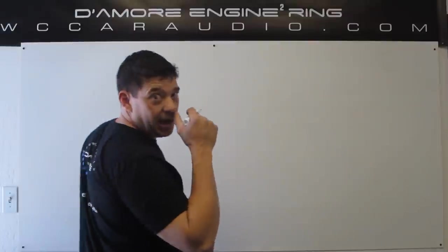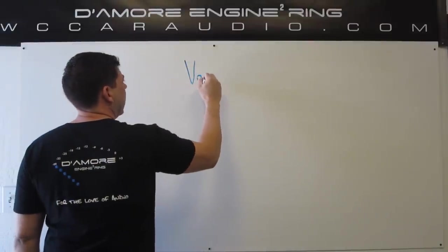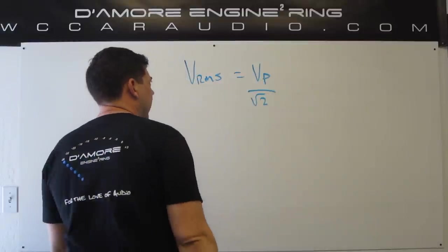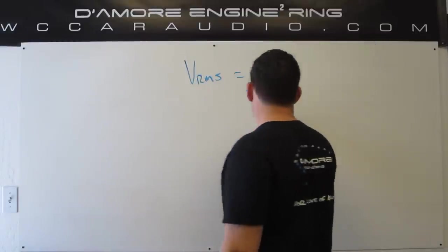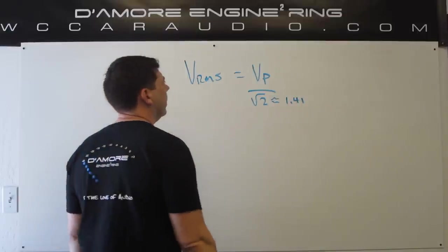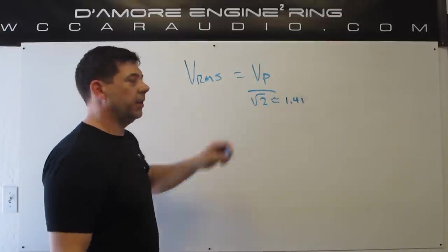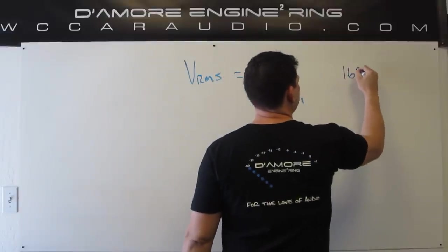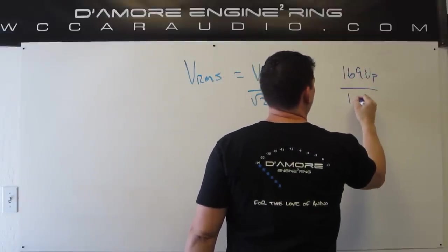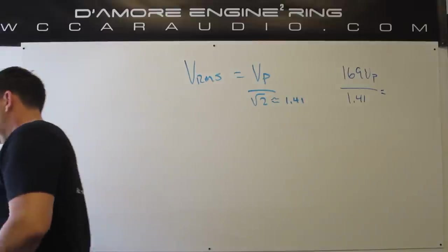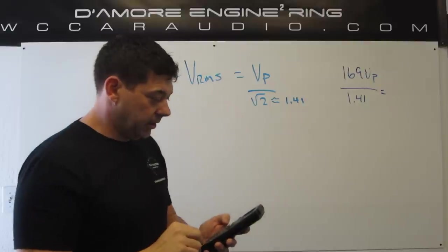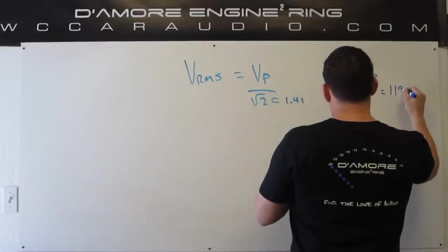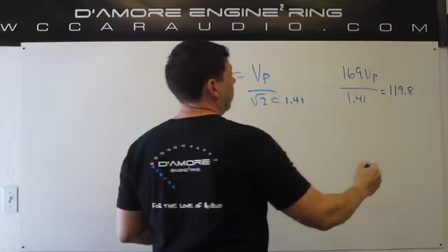We've simplified all that complicated math by saying the RMS is the peak divided by √2, which is approximately 1.41. So you can take the peak divided by 1.41 to get the RMS, as long as it's a clean sine wave. For our wall socket example: 169 volts peak divided by 1.41 gives 119.8 volts RMS — close enough to what all that intense math said.